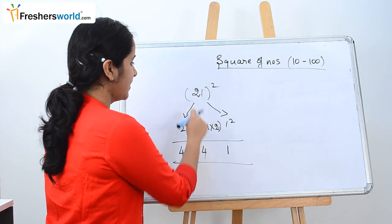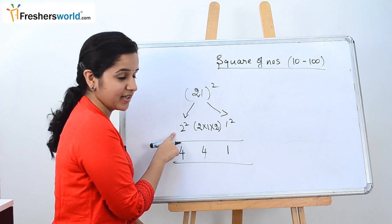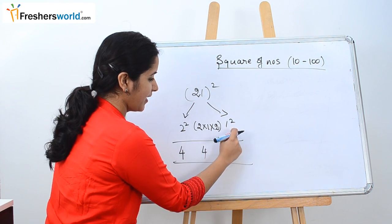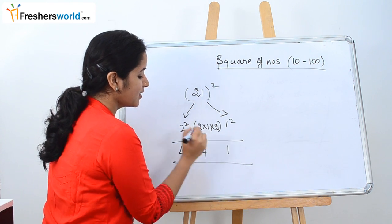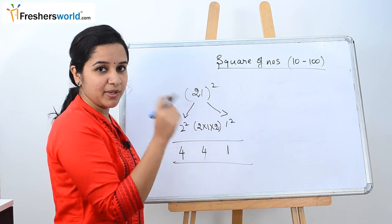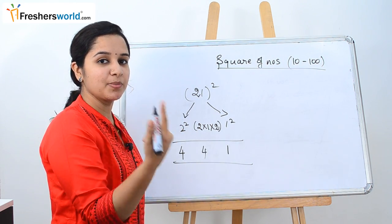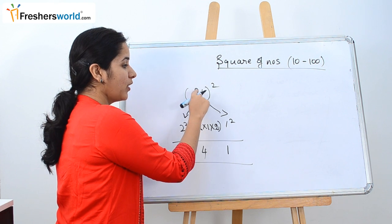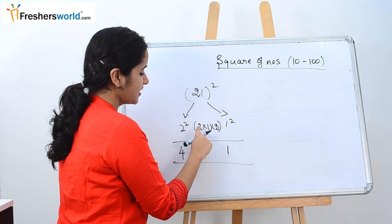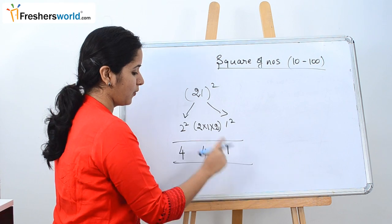So how did we do it? We take the 10s digit, square it, then we take the units digit, square it. So write it in both the corners. For the middle digit what we do, the given numbers are multiplied and then they are again multiplied by 2. So it is nothing but 2 into 1 into 2 which is nothing but 2 into 1 into 4. So 441.